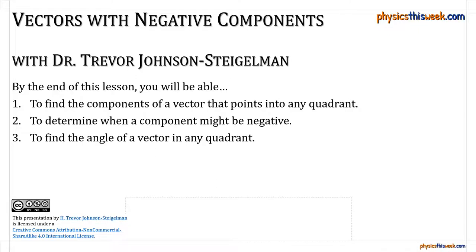Hello, I'm Dr. Trevor from PhysicsThisWeek.com. Today let's talk about vectors that happen to have negative components. By the end of this lesson you should be able to find the components of any vector that points into any quadrant, determine when a component might be negative, and find the angle of a vector when it points into any particular quadrant.